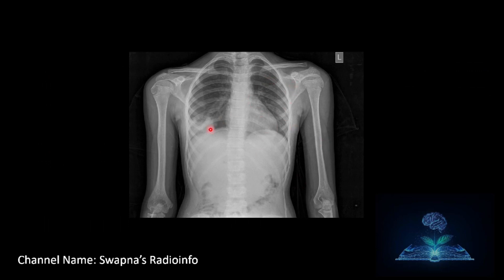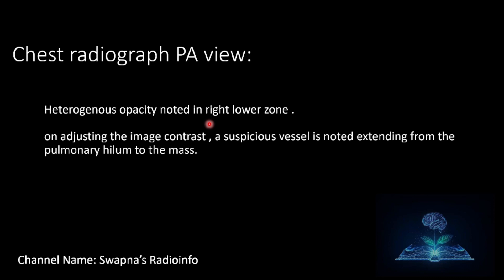The chest radiograph shows heterogeneous opacity noted in the right lower zone, and on adjusting the imaging contrast, a suspicious vessel was noted extending from the pulmonary hilum to the mass. Next, we did an ultrasound of the chest.